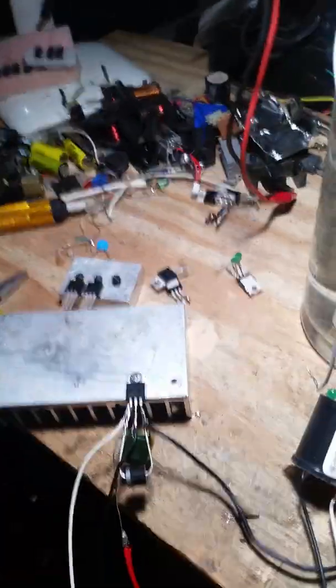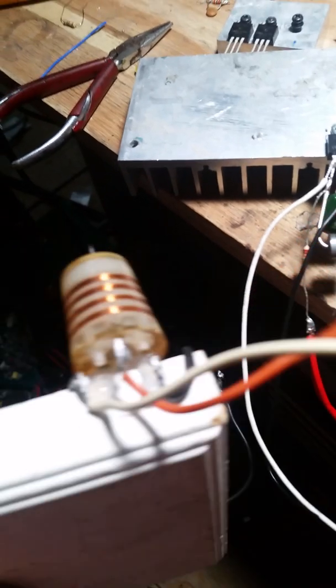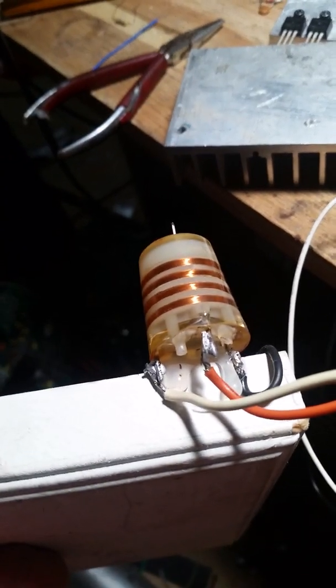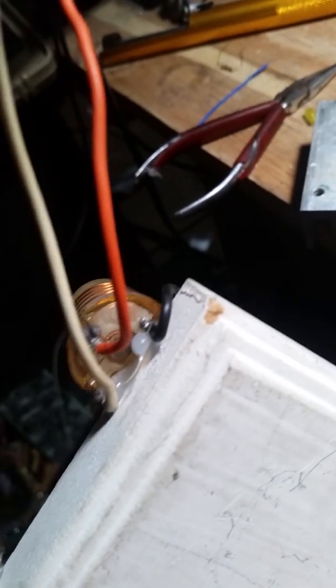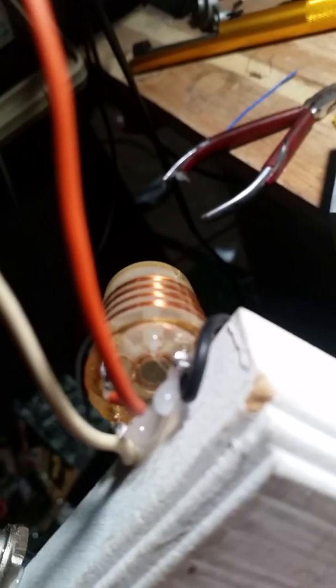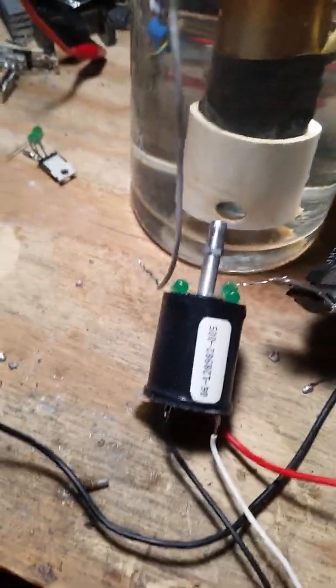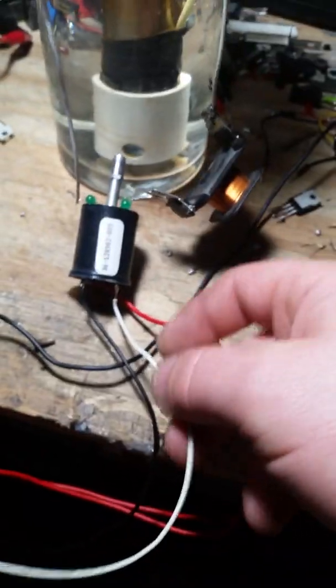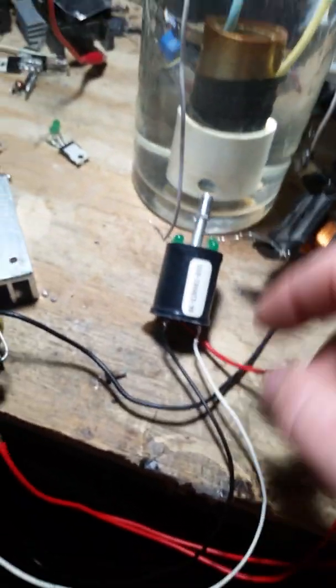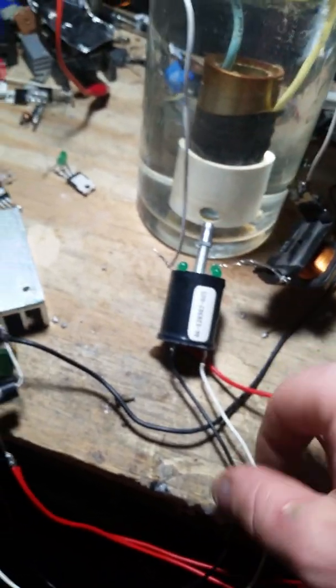This is what that coil looks like on the inside. There's a primary in there, it's wrapped just very few times but you can see the secondary there because this one's clear. There's a better view of that primary in there. Here's another one of them little coils.